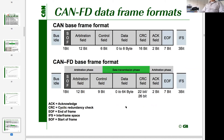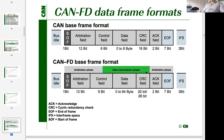CANFD allows enlarging the data field up to 64 bytes and transmitting this data field at a higher bitrate. CANFD with flexible data rate means you have the option to transmit more data — up to 64 bytes — and to do so in an accelerated way, using exactly two communication speeds: one for the arbitration phase and the end of the frame, and one additional accelerated speed for communicating the data field.